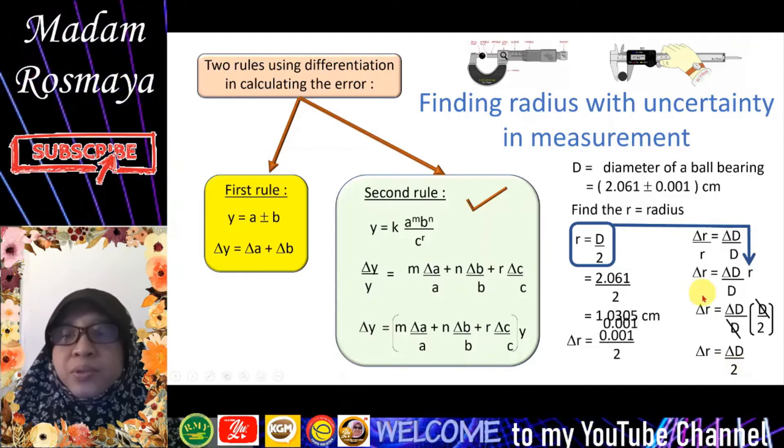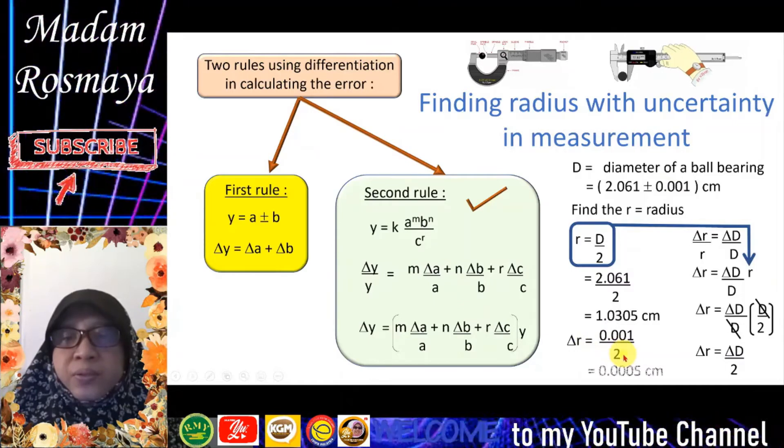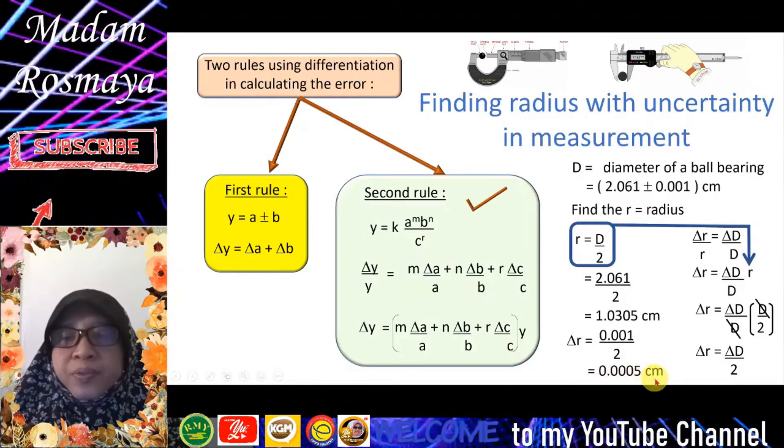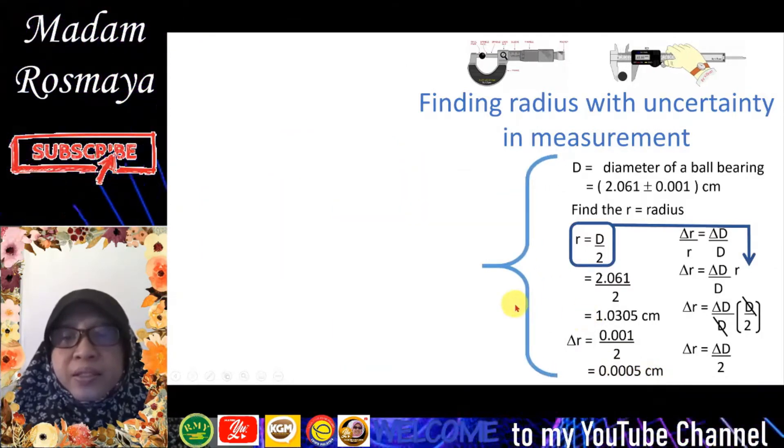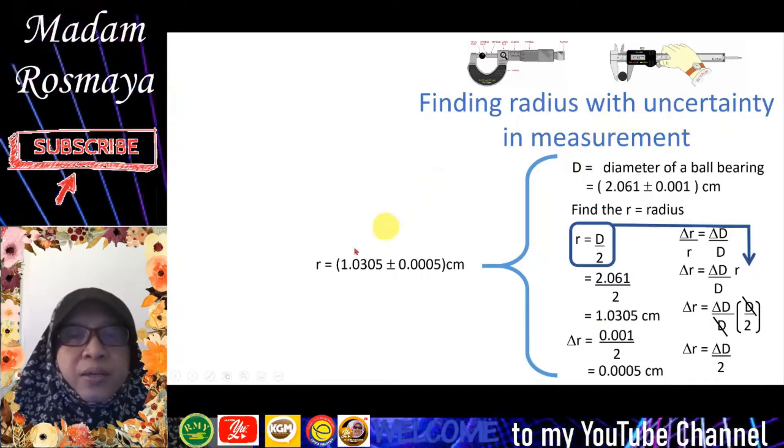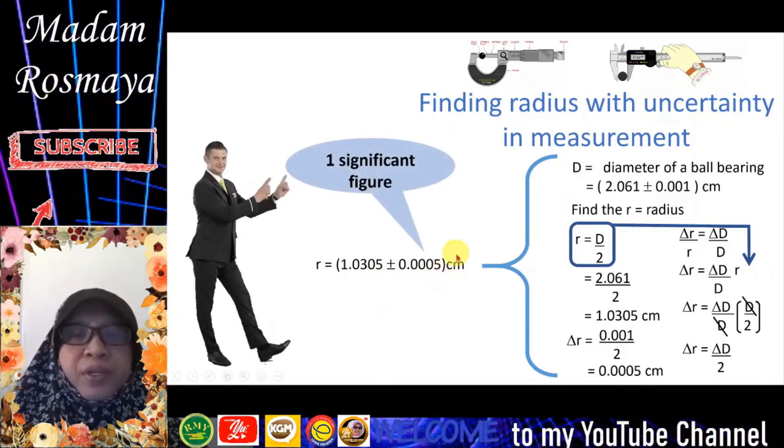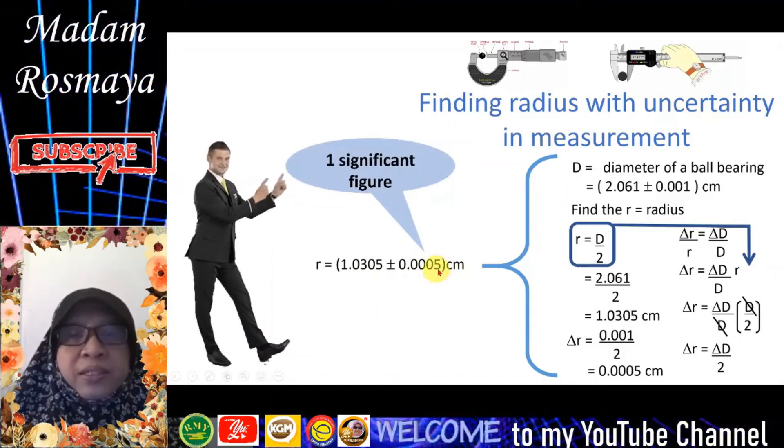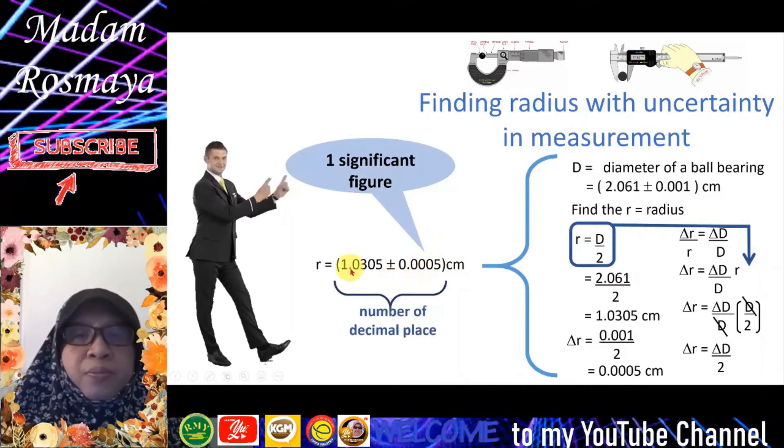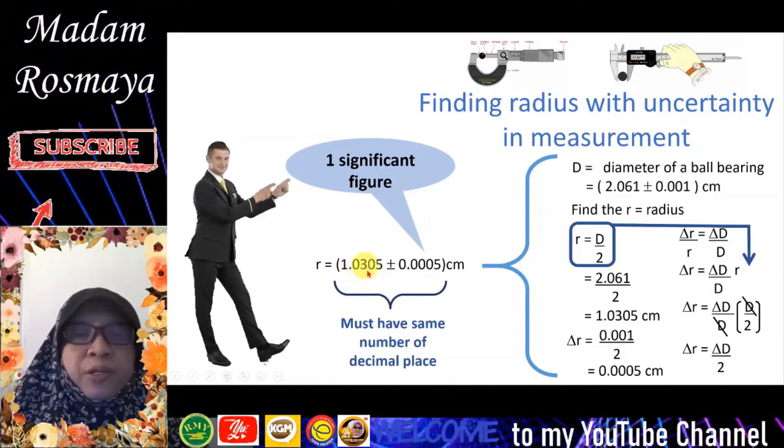Now we substitute Δd = 0.001 into the Δr formula. So we get 0.001 divided by 2, we get 0.0005 cm. Next we can write the radius with uncertainty. So we get 1.0305 ± 0.0005 cm. The error or uncertainty here must be written in one significant figure, and both must have the same number of decimal places. So 1.0305 is written in 4 decimal places.